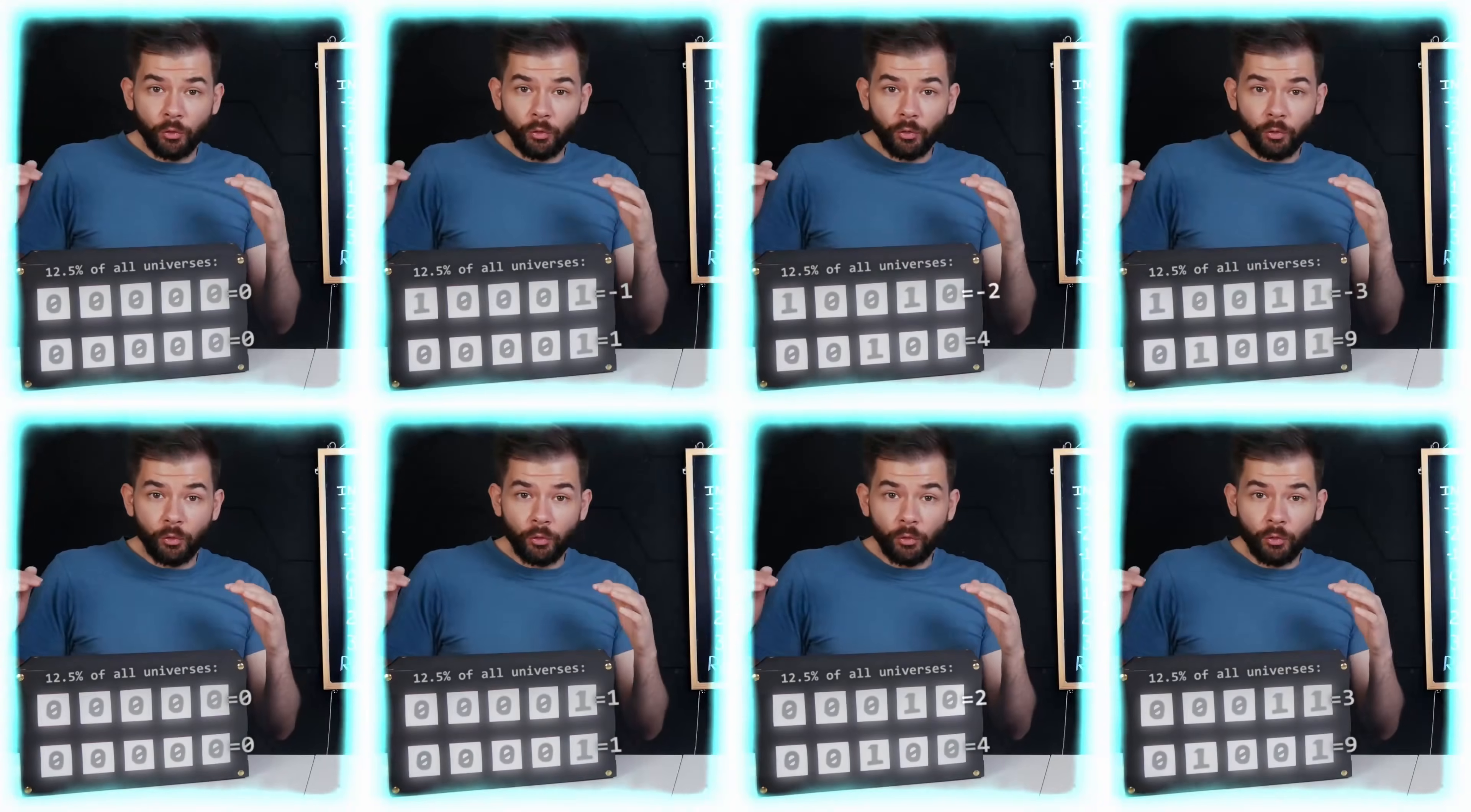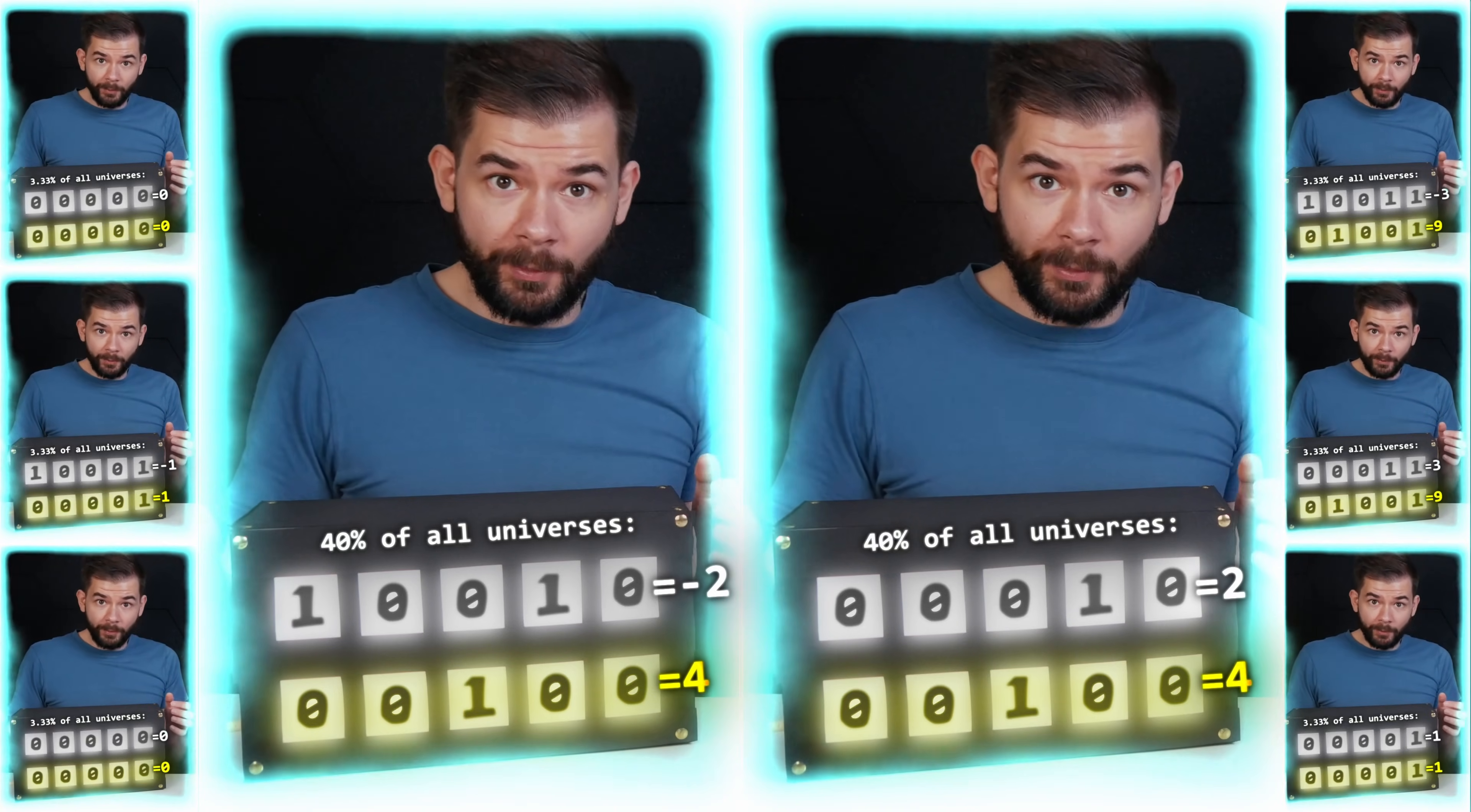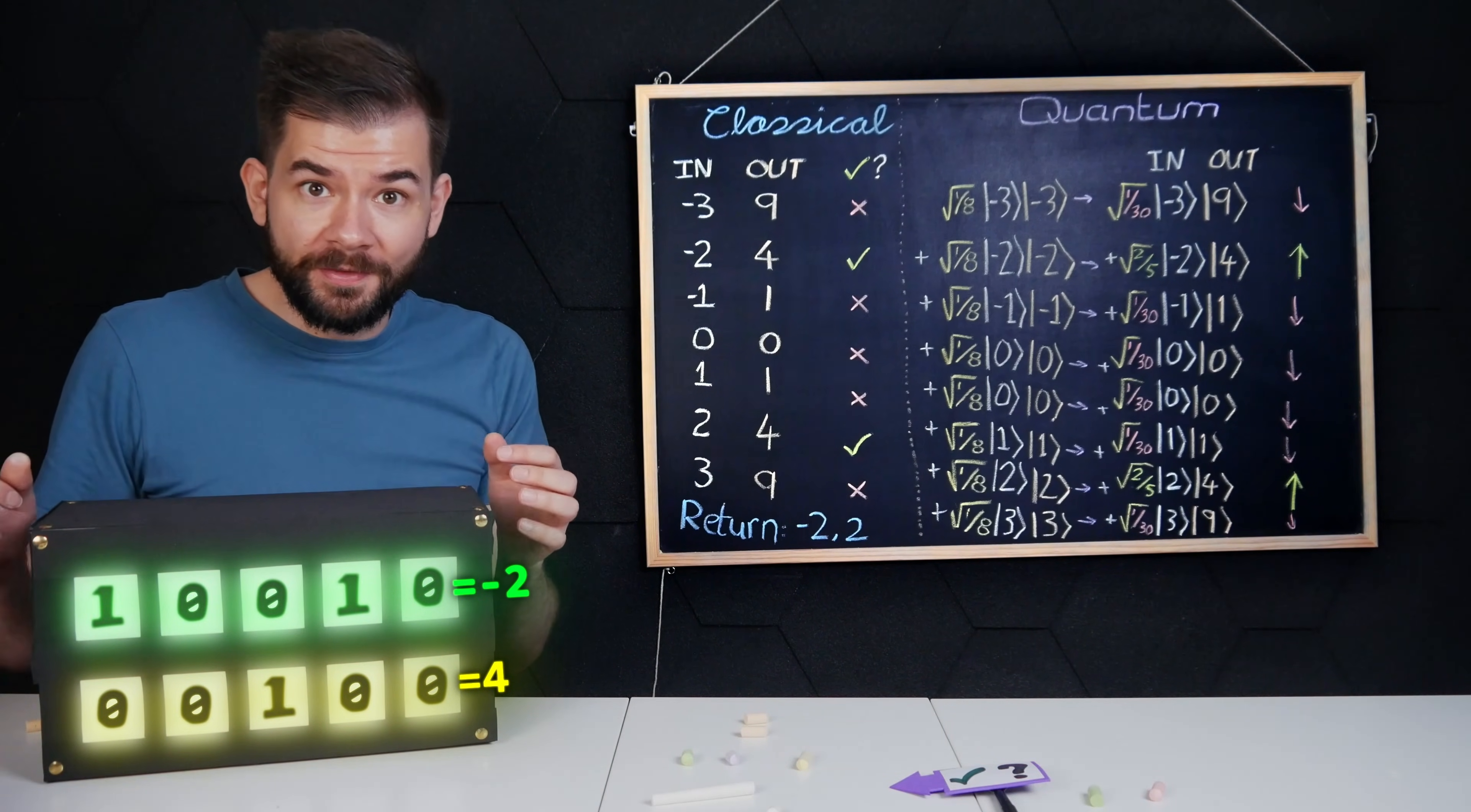In the many worlds approach, all eight situations were equally likely. But then the amirite function boosted the probability of output four. After measuring we were probably going to be in an input two or input minus two universe. I can observe one of the correct inputs with certainty.